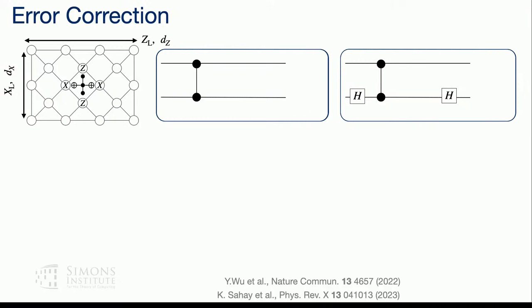To measure the stabilizers of the code, you put an ancilla qubit at the center and do a series of CNOT and C-phase gates between the ancilla and the data qubits. The C-phase gate has already been described. The dominant errors are I or Z errors. A Z error during the C-phase gate will anti-commute with the stabilizers to its left and right, creating a syndrome in the horizontal direction.